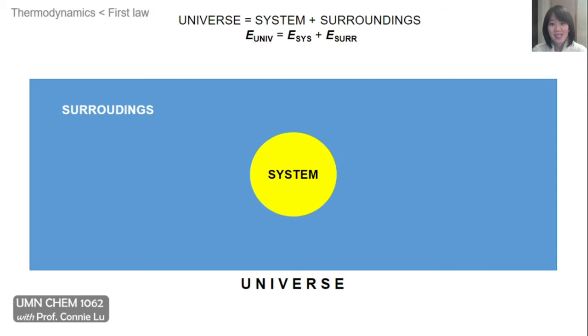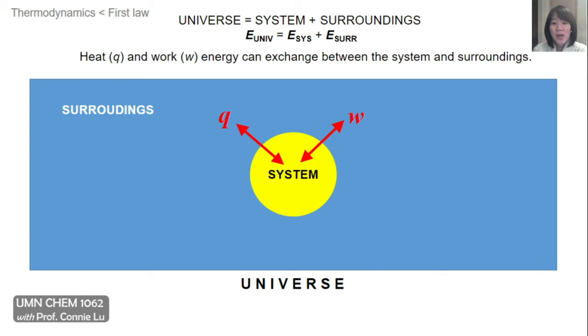And so my universe is only composed of my system and its surroundings. If I wanted to tally the total energy of my universe, I could write it neatly as a sum of the energy of my system plus the energy of my surroundings. In this universe, the system and the surroundings are not isolated from one another, and so it's possible for energy to exchange in between these two components. The ways that energy can be exchanged are through two forms, heat, represented here by Q, and work, represented by W.